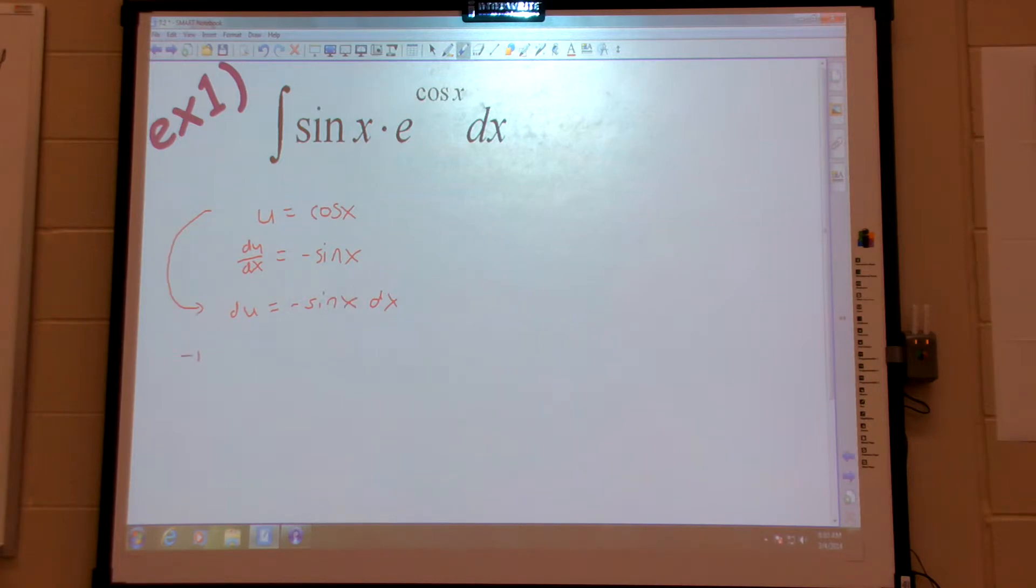So, I'm going to actually put negative one over sine x du equals dx. Can you put just negative du over sine x, or do you want to do it like that? It doesn't matter. This would be a little more helpful to see. But, as you do more and more, it won't matter.